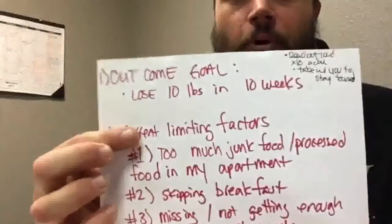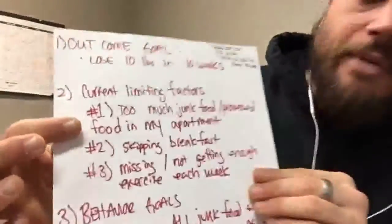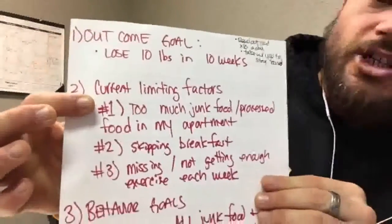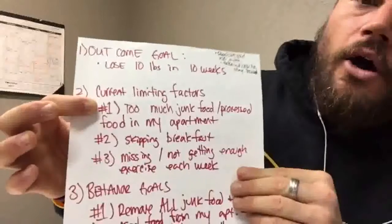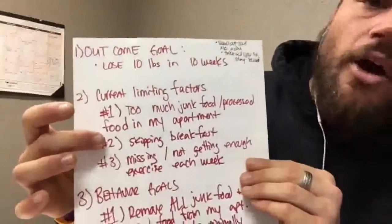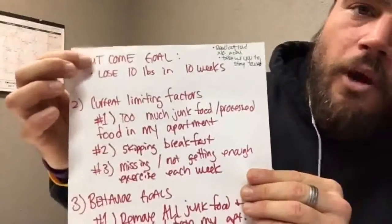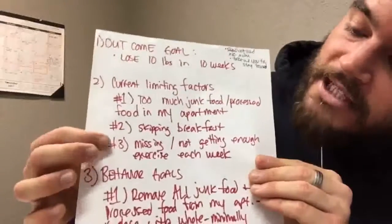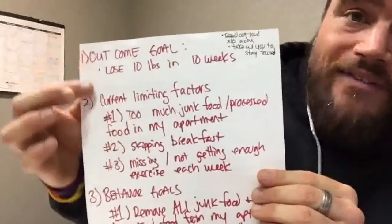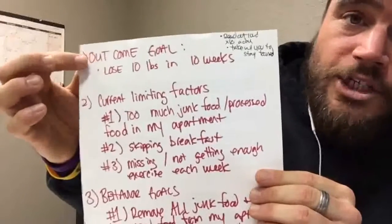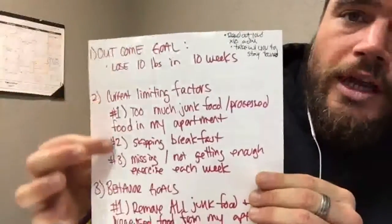The second thing you want to do is write out your limiting factors. Go with your top three. My first limiting factor is I have too much junk food or processed food in my cabinets, fridge, and freezer — I already know that if it's in the house, I'm going to eat it. The second thing is I don't eat breakfast; if I do, it's maybe once or twice a week, and skipping breakfast is not going to get me to my weight loss goal. The last limiting factor is missing or just not doing any exercise during the week at all. So after you have your outcome goal, list the things that are currently holding you back.